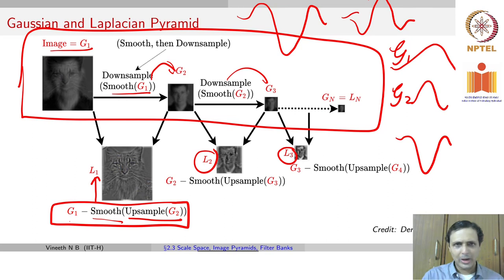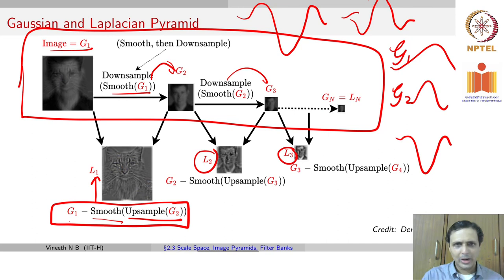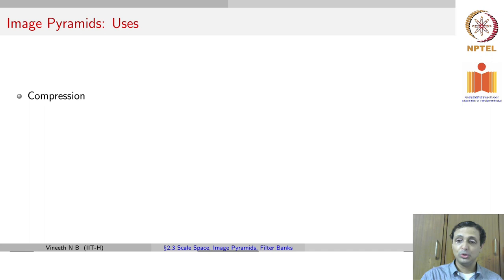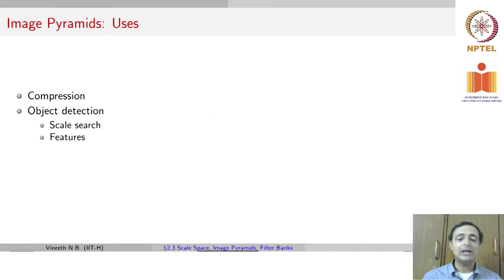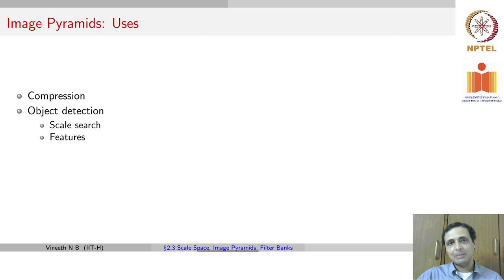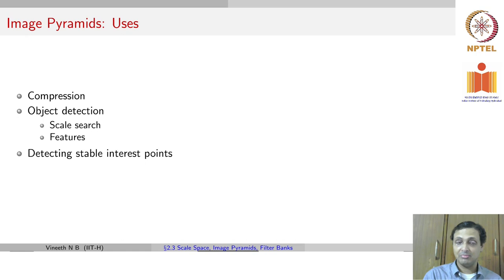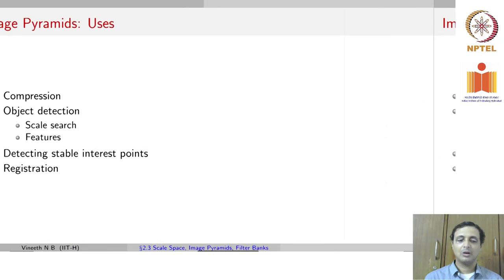Image pyramids are used in multiple applications. For compression, you transmit a low-resolution version and reconstruct higher resolution from it. For object detection, you do a scale search: first look for an object at a low-resolution level, find the region, then search more carefully at the next higher resolution, and repeat. You can also use image pyramids for stable interest points, which is what we have been discussing.